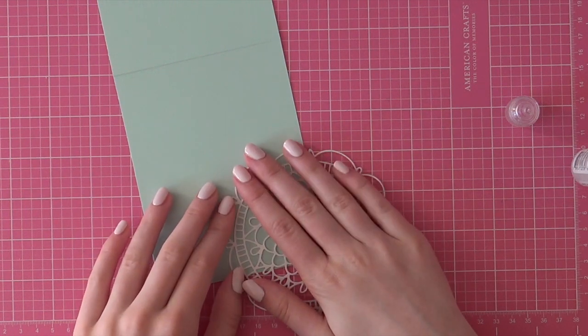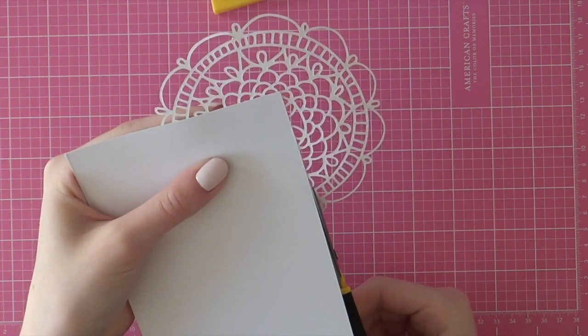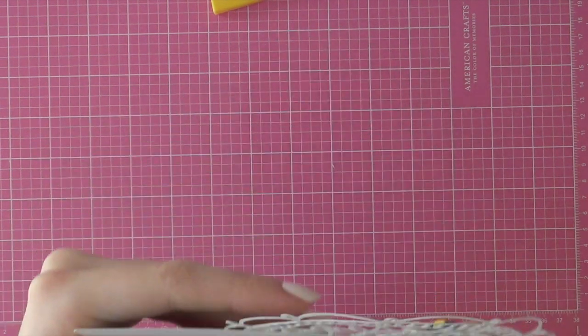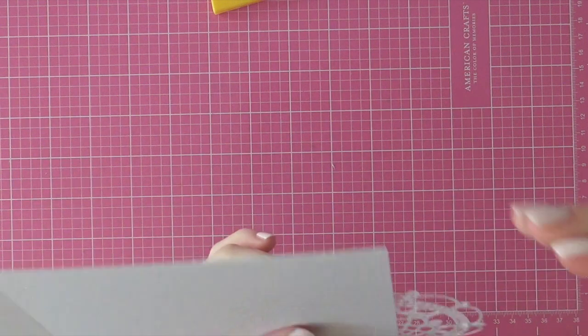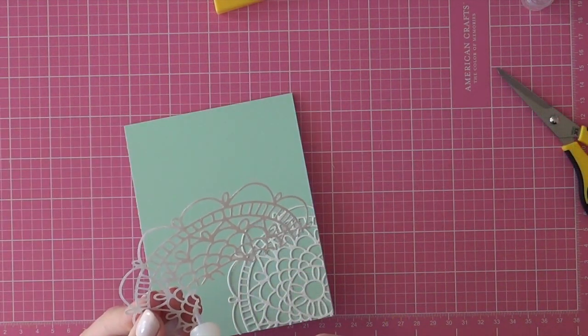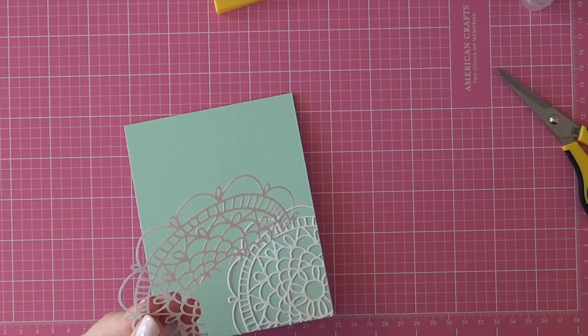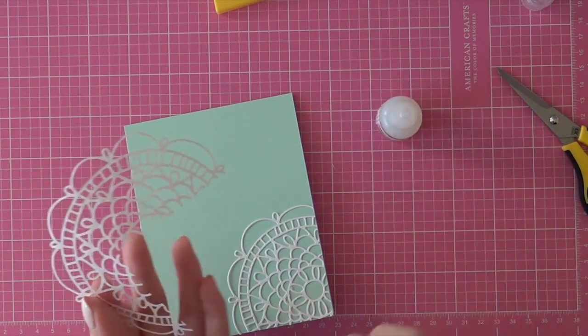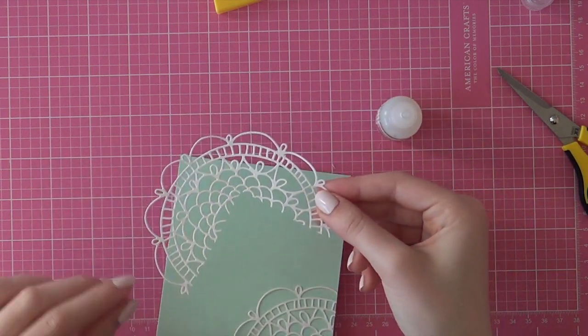Tombow mono multi glue would work perfectly as well. Then I turned around my paper and I am cutting that edge that is hanging off over there using my EK Success Cutterbee scissors. And I saved those pieces for the rest of my card because I will be creating these offset doilies.